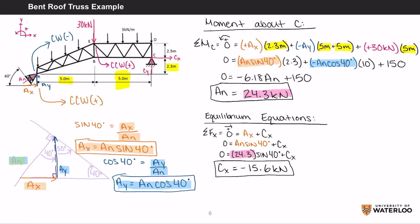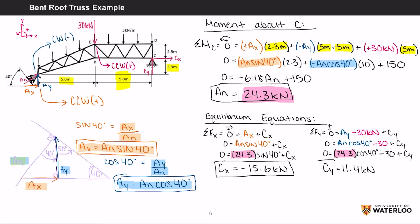Remember that the negative just means we assumed the wrong direction of the force. The net force in the Y direction equals 0 in equilibrium, which equals AY subtract 30 kilonewtons plus CY. Substituting in AY for AN cos 40 and remembering that AN equals 24.3 kilonewtons, we get CY equals 11.4 kilonewtons. Now that we've found all the reaction forces in this structure, we can move on to the next question.